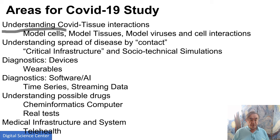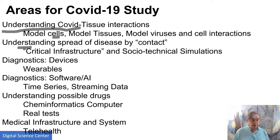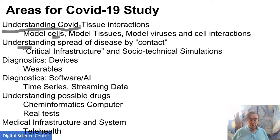Understanding how COVID interacts with tissues — you have to model cells, tissues, viruses, and the cell-virus interactions. You also have to understand how the disease is spread by contact, which is actually the same technology used to model critical infrastructure, so-called socio-technical simulations. In a lot of these simulations, the basis is a model for how the world works: who moves, where, when — whether it's a person, a car, an atomic bomb, or an aircraft.